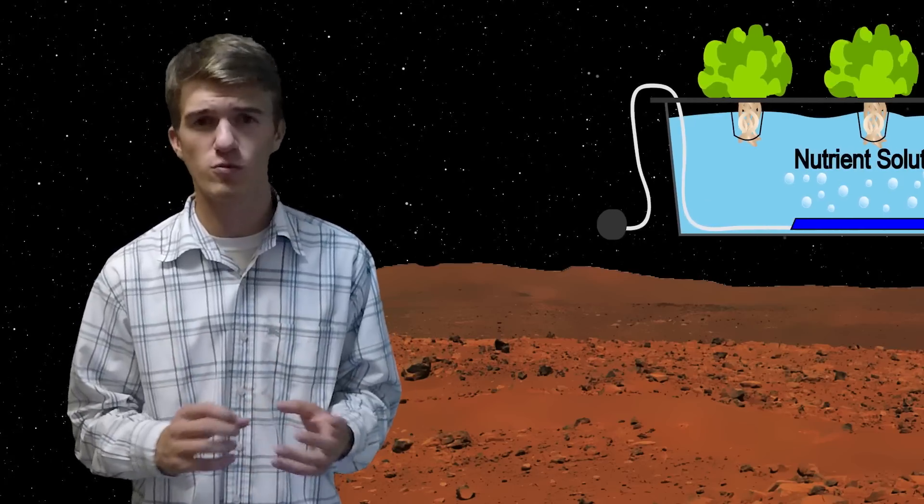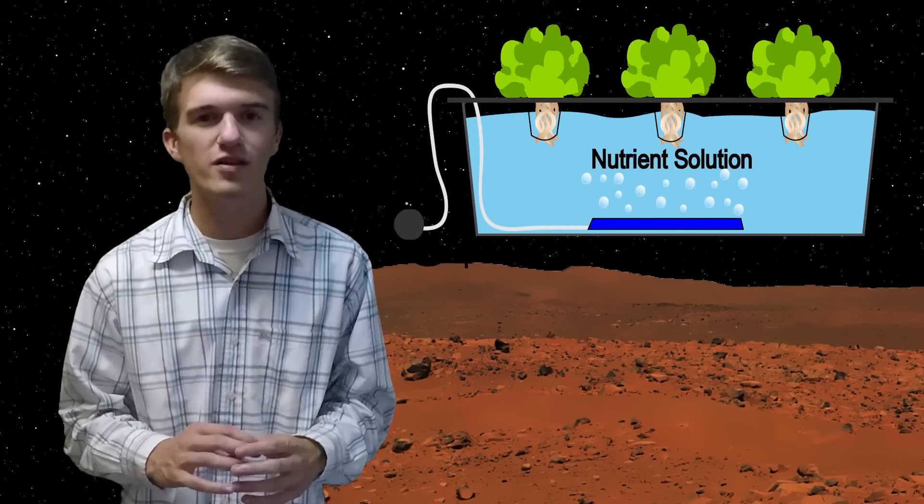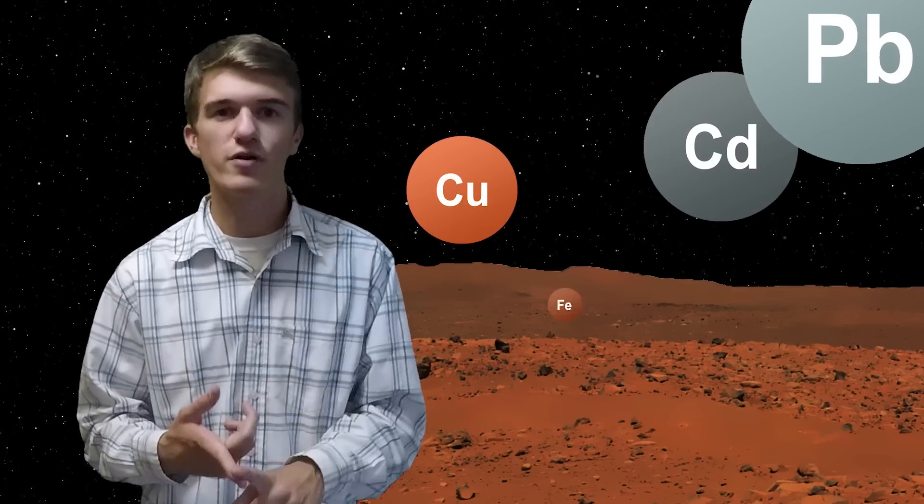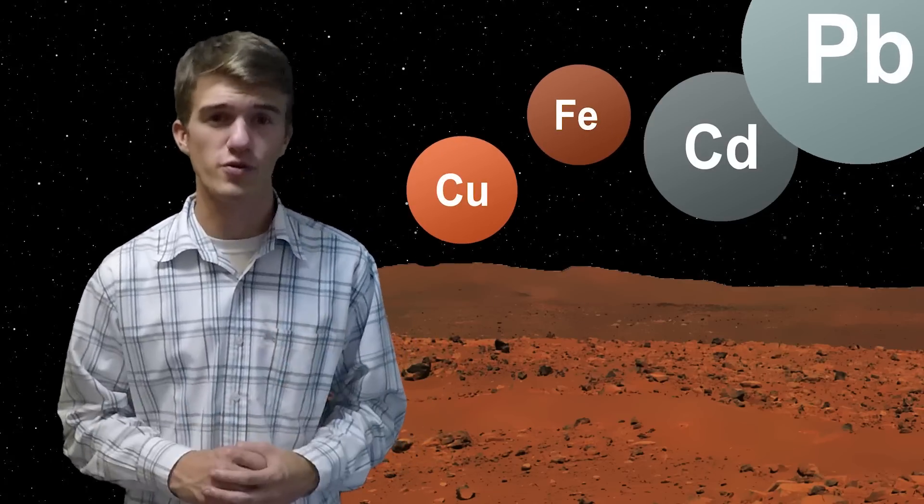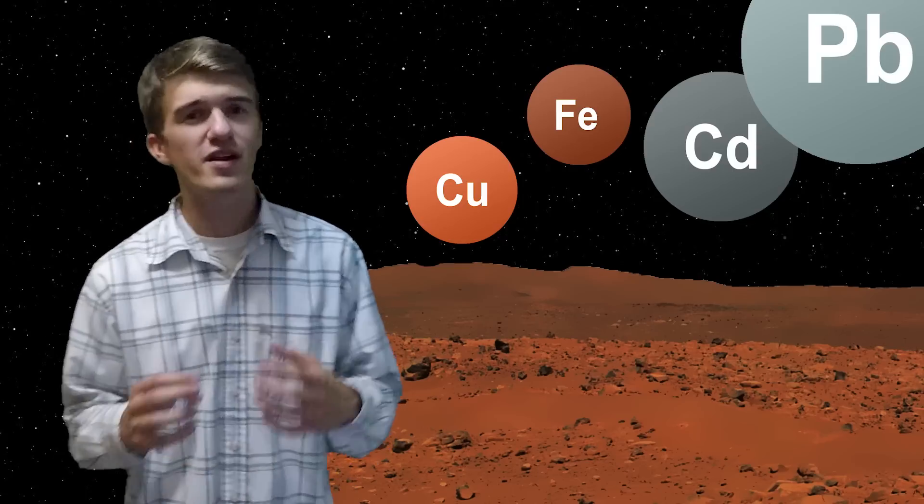Now, there are still more challenges to growing vegetables on Mars. Some scientists believe that the first few generations of these vegetables will probably have to be hydroponics, or without soil. And that is because the Martian regolith, or soil, is made up of heavy elements such as cadmium, copper, lead, iron, all of which are pretty harmful to vegetables that want to use that soil to grow. In addition, there's not a lot of nitrogen, so we would have to provide our own fertilizer for it to grow.